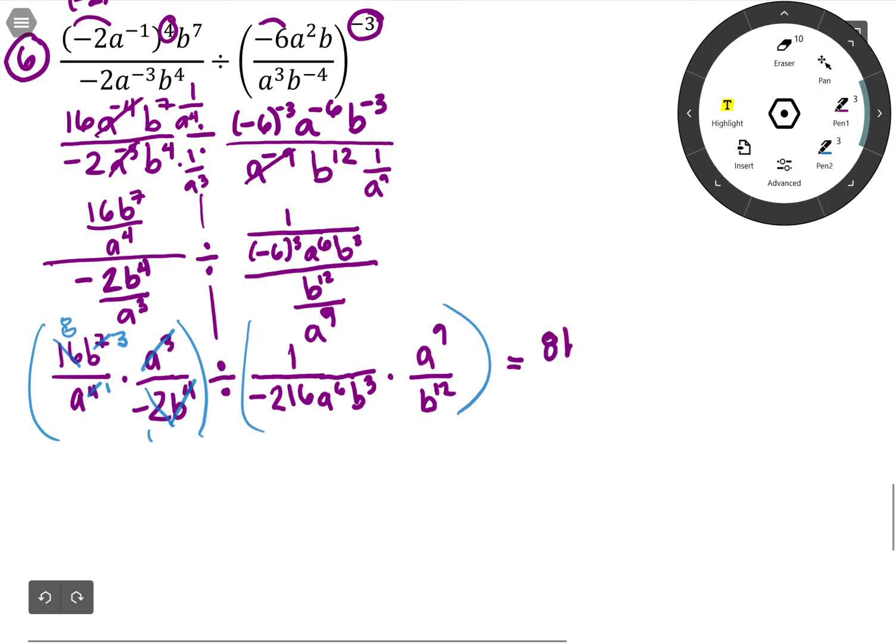8b cubed over a, and then that's going to be divided by—let's see what we've got on this side. So we have 6 a's to cancel, which will leave us 3 on the top.